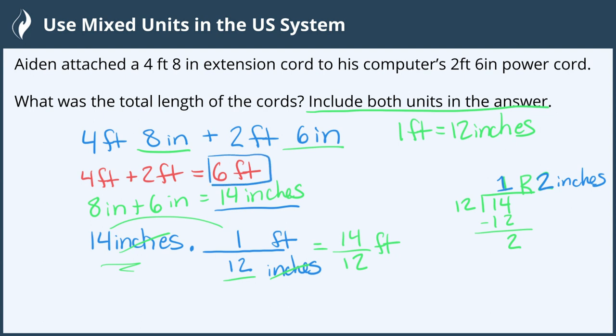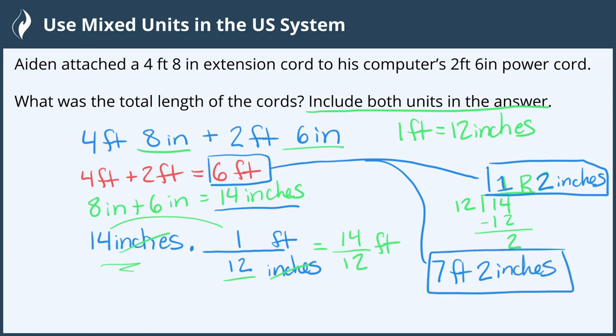Now we have our total number of feet, 6 feet, and we've converted our 14 inches to 1 foot 2 inches. So we can combine those to make our total of 7 feet 2 inches. That's the length of the cords, and we're all done!